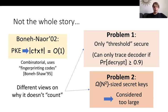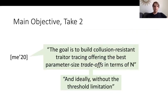Based on these problems identified with the Boneh-Naor scheme, I want to take a more general view of what the goal of traitor tracing is. So if you ask me today, I would say the main goal is to build a collusion-resistant traitor tracing scheme that offers the best parameter-size trade-offs in terms of the number of users N. And ideally, we would do this also without the threshold limitation. This is going to be the overarching goal of this talk.